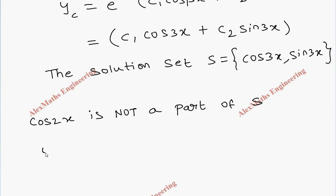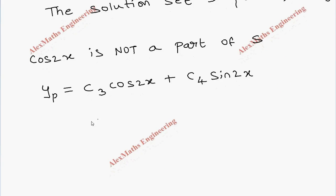Therefore we have to assume the particular integral as c3 cos 2x plus c4 sin 2x. Now we have to find its first derivative, which is minus 2c3 sin 2x plus 2c4 cos 2x.